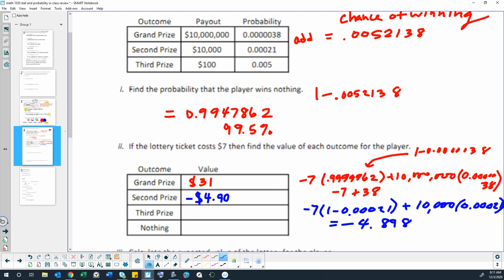That would be an expected value of negative $4.90. An expected value of $31 means to guarantee winning the $10 million, you would have to buy enough lottery tickets to guarantee winning, which means you would only make a profit of $31. For the second prize, you would still be in the hole $4.90 after winning the $10,000.